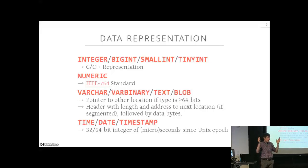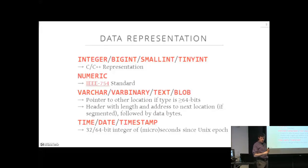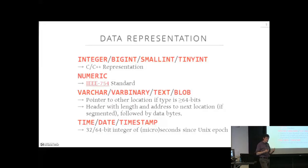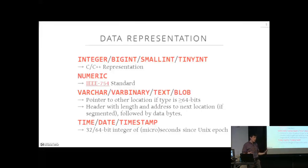IEEE 754 specifies the memory layout for 32-bit and 64-bit floating-point numbers, including rules for rounding, how to represent non-numbers, rational numbers, and what happens when you add a 32-bit float and a 64-bit float. We rely on C++'s implementation of this standard. If you're ever curious why you get rounding errors with floating-point numbers in a database system, this standard explains exactly how a computer should operate.